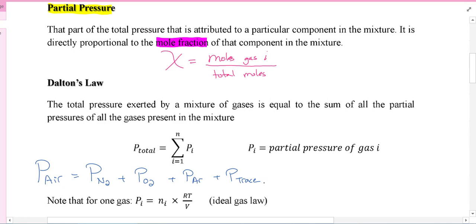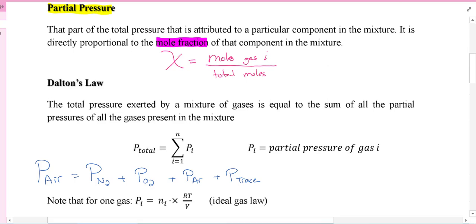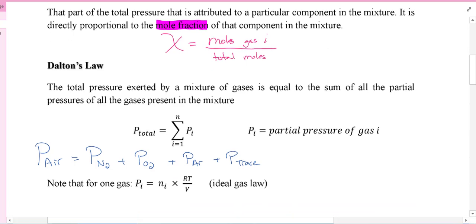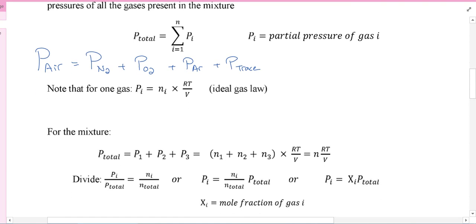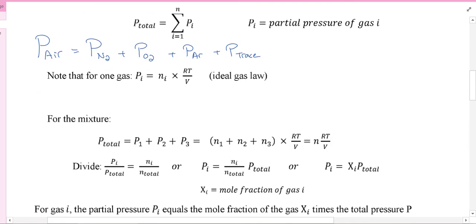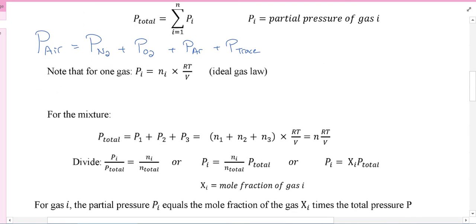And that would be the air pressure. There's mostly nitrogen, then oxygen, then argon - and that's over 99.9% of air. The rest is just trace molecules. Now for one gas, the mole fraction would be one - one mole of gas over one total mole, or five moles of gas over five moles. Mole fraction is one. So for one gas, P is the ideal gas law - it's the total pressure.